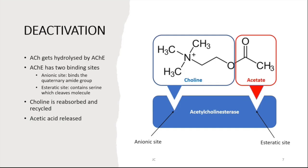Acetylcholine deactivation: acetylcholine is hydrolyzed by acetylcholinesterase. This enzyme has two binding sites — the anionic site and the esteratic site. The anionic site binds the quaternary amine group (choline) and holds the molecule close to the enzyme, allowing the esteratic site to cleave the molecule into choline and acetate. Choline is reabsorbed and recycled, and acetic acid is released.